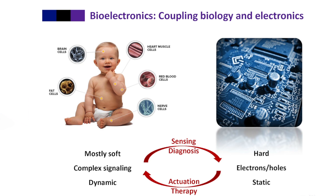For example, in terms of mechanical properties, the human body is mostly soft tissue, while electronics as we know them today are mechanically hard. Communication happens differently in our body than in an electronic circuit.